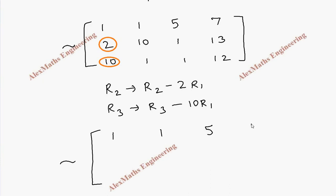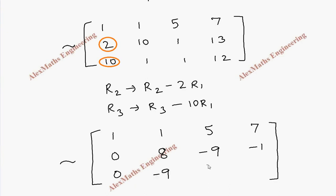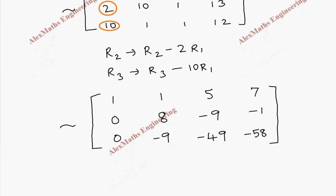For the new augmented matrix, R1 stays as it is. For R2: 2 minus 2 = 0; 10 minus 2 = 8; 1 minus 10 = minus 9; and 13 minus 14 = minus 1. For R3: 10 minus 10 = 0; 1 minus 10 = minus 9; 1 minus 10 = minus 9; and 12 minus 70 = minus 58.